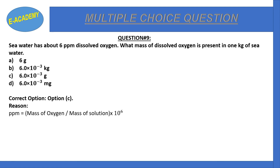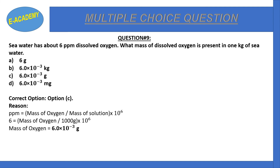Mass of oxygen divided by mass of solution multiplied by 10⁶ equals parts per million. Parts per million value is 6, mass of solution is 1 kg. Solving for mass of oxygen gives 6×10⁻³ grams.